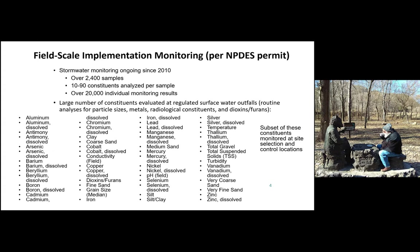The constituents examined include particulate size distributions, heavy metals, radiological constituents, and dioxins and furans. Screening also occurs once a year for a large number of additional constituents, including volatiles, which are generally not seen in the stormwater. We are looking at a subset of these when monitoring site selection and control locations, and we've tracked performance at the NPDES regulated outfalls over this period of time.